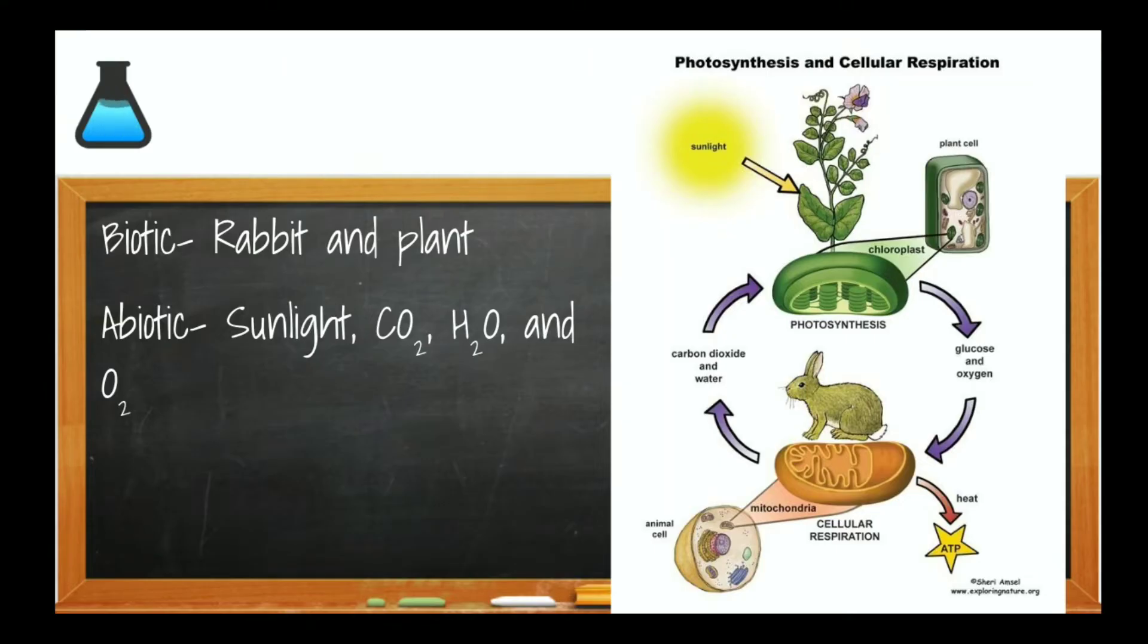So in this diagram, you can notice we have some abiotic factors like water, sunlight, carbon dioxide, and oxygen, and some biotic factors, like a rabbit and a plant.